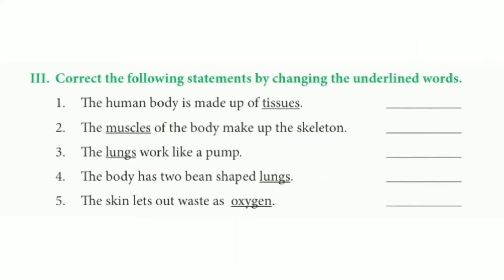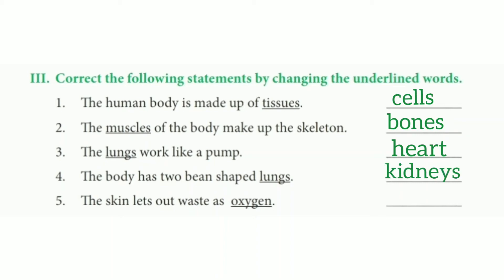Now let's correct the following statements by changing the underlined words. Number 1 — 'The human body is made up of tissues' — change 'tissues' to cells; the human body is made up of cells. Number 2 — 'The muscles of the body make up the skeleton' — it is the bones of the body that make up the skeleton. Number 3 — 'The lungs work like a pump' — it is the heart that works like a pump. Number 4 — 'The body has two bean-shaped lungs' — the bean-shaped organs are the kidneys. Number 5 — 'The skin lets out waste as oxygen' — the skin lets out waste as sweat.